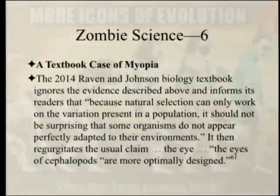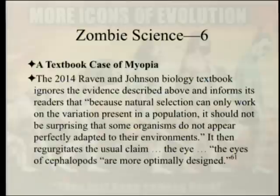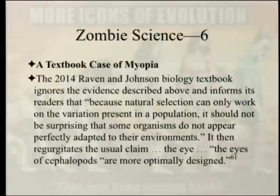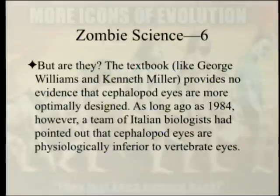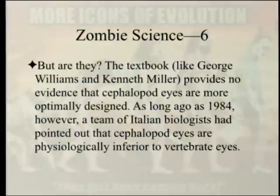A textbook case of myopia: the 2014 Raven and Johnson Biology textbook ignores all the evidence described above, informing readers that because natural selection can only work on variations present in a population, it should not be surprising that some organisms don't appear perfectly adapted. It then regurgitates the usual claim that cephalopod eyes are more optimally designed. But think about it — if it only takes a quarter to a third of a million years to develop an eye, why not develop better eyes next time? And are cephalopod eyes actually better? As long ago as 1984, a team of Italian biologists pointed out that cephalopod eyes are physiologically inferior to vertebrate eyes.